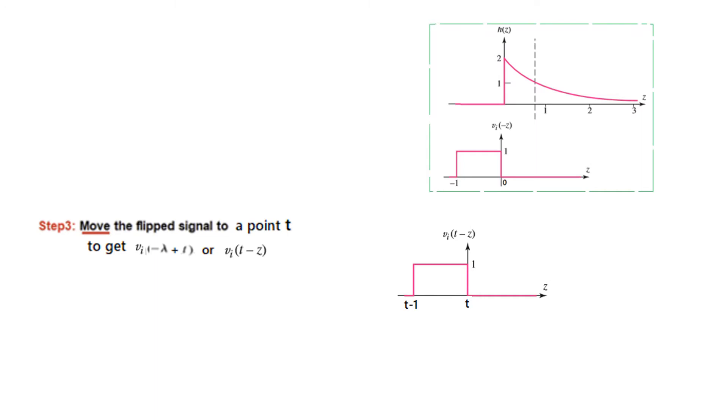Step number third is move the flip signal to a point T. So we move it to a point T. Now T could be either on the left hand side or right hand side. So as if we have moved this towards left to a point T, and now couple of things happening. Number one this zero will now become T, and therefore minus one will become T minus one. And the name will also change from minus z to minus z plus T, or you can say T minus z is all the same.